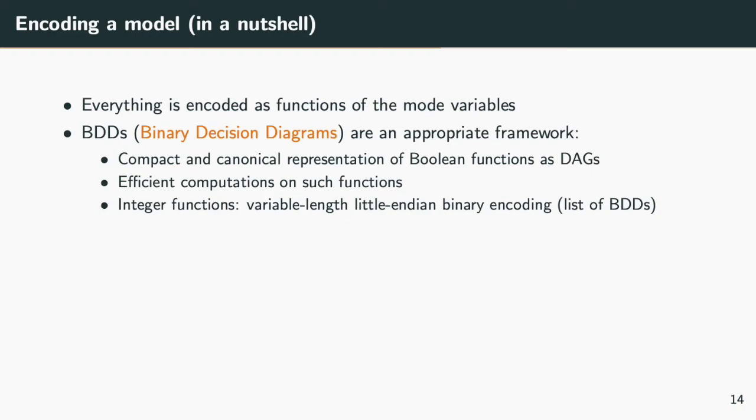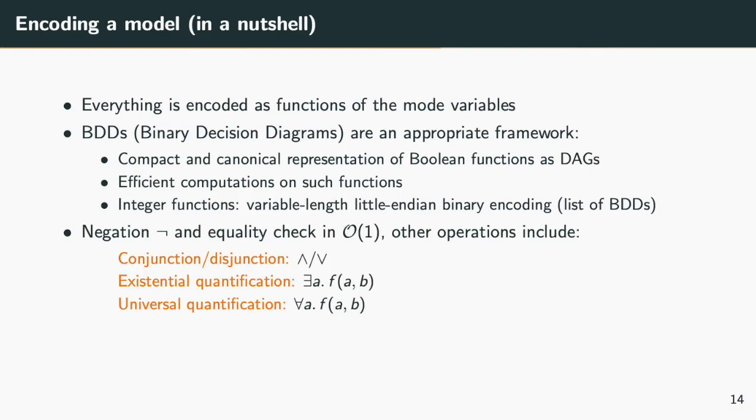They make it possible to represent these functions as directed acyclic graphs. Integer functions are represented as lists of BDDs using a little-endian binary encoding. BDDs offer efficient boolean operations. Complementation and equality are done in constant time. We use the conjunction and disjunction operators. We also use, in many places, quantifier eliminations.